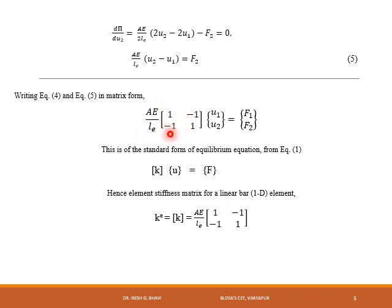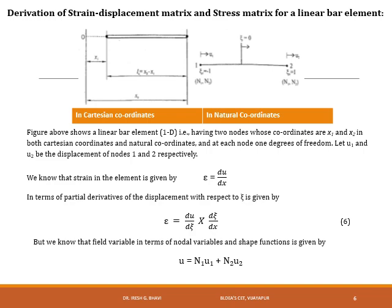This is of the standard form of the equilibrium equation k·u = f, where k is the element stiffness matrix. That is, k = (Ae/Le)·[1, −1; −1, 1]. This is the element stiffness matrix for a linear bar element.